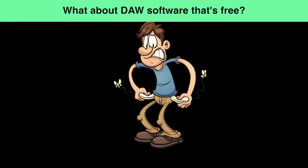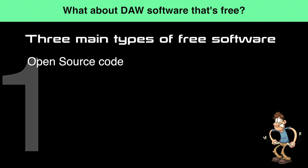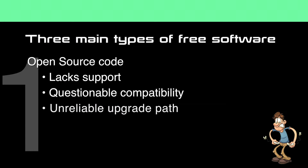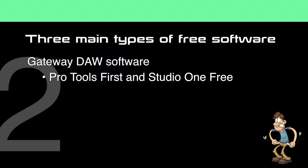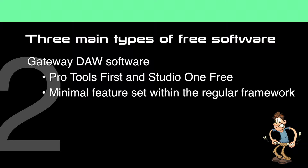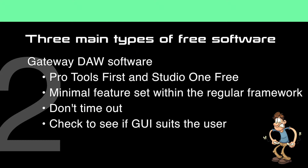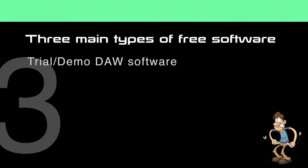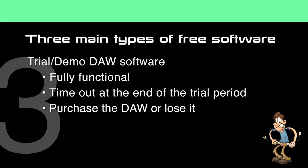What about DAW software that's free? There are really three main types. DAW software written using open source code is meant to be free and will remain free, but it lacks support, compatibility with the professional world, and a reliable upgrade path. Gateway DAW software, such as Pro Tools First and Studio One Free, offers users a way to get used to a world-class DAW with a minimal feature set within the framework of the commercial versions. These free DAWs don't time out. Virtually all manufacturers also offer free trial or demo versions, which are usually fully functional but time out at the end of 30 days or so, causing the user to either purchase the DAW or lose it.